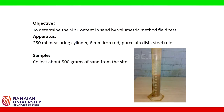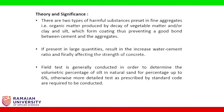There are two types of harmful substances present in fine aggregates: organic matter produced by decay of vegetable matter, and clay and silt which form a coating, thus preventing a good bond between cement and the aggregates. If present in large quantities, they result in an increased water-cement ratio.